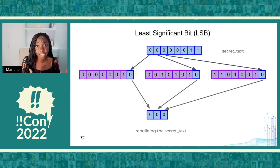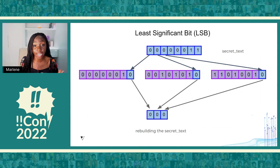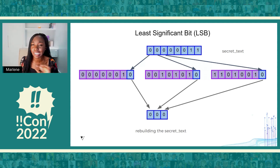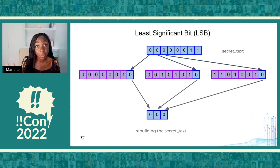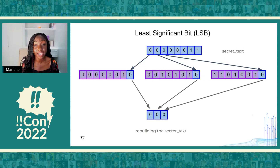In its most simplistic form, an LSB algorithm replaces the least significant bit of each byte in the cover data with one bit from the secret message. In our case, each bit of our secret message is embedded into our cover audio byte by byte. Most of the time, this doesn't affect how the cover data looks or sounds, since only one bit per byte is changed — so our audio file should sound exactly the same. Once this is done, the audio file is ready to be sent to our crush, who will then select the least significant bit of each byte and put these together to rebuild the secret message.